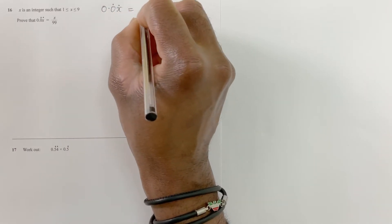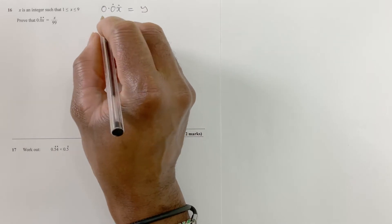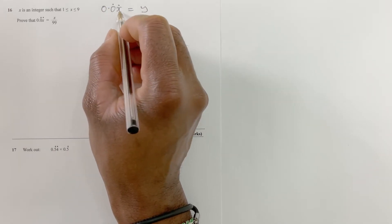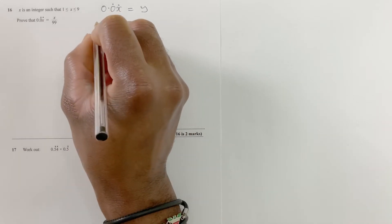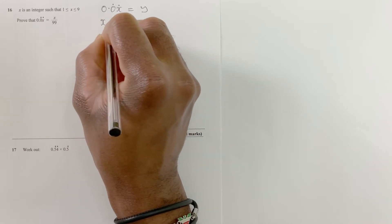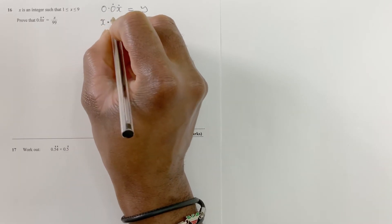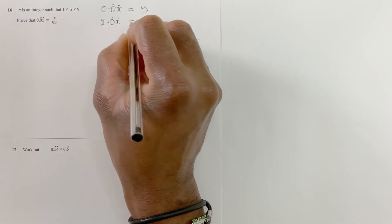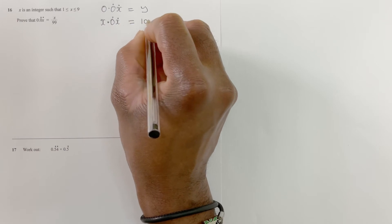equals y. If I multiply that by 100 because I want to go to the next recurring position, multiply by 100, so we get x.0 recurring x recurring equals 100y.